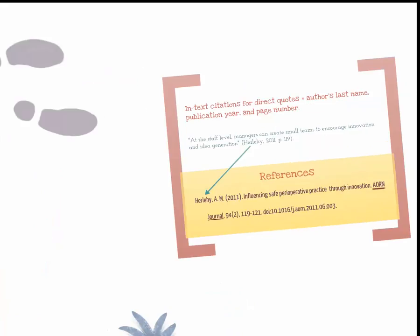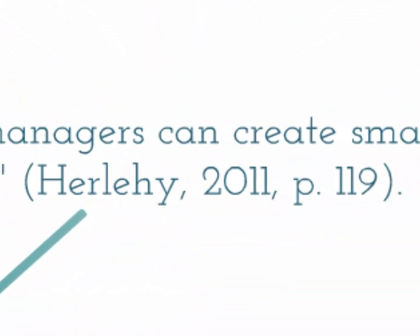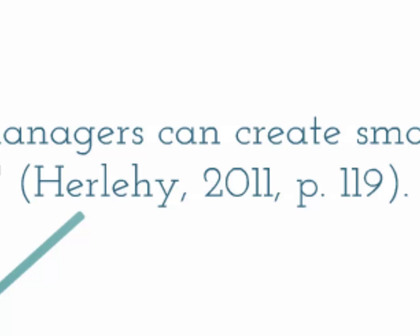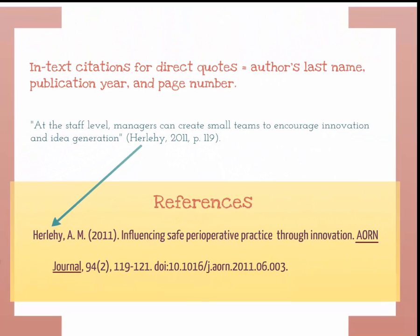Any source you quote or paraphrase must have an in-text citation. After the quote, put the author's last name, the year the article was published, and the page number, all separated by commas. The in-text citation alerts your reader to look at your references list for the full citation.